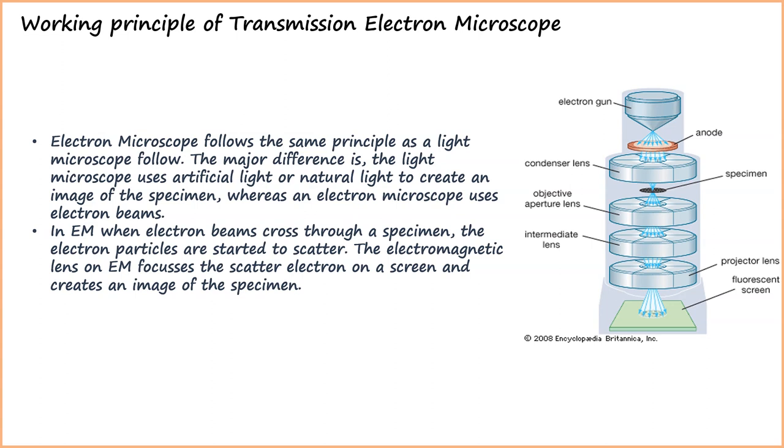In TEM, when electron beams cross through a specimen, the electron particles start to scatter. The electromagnetic lens in TEM focuses the scattered electrons on a screen and creates an image of the specimen.